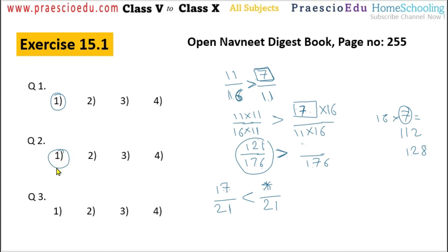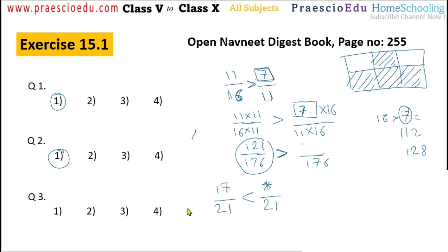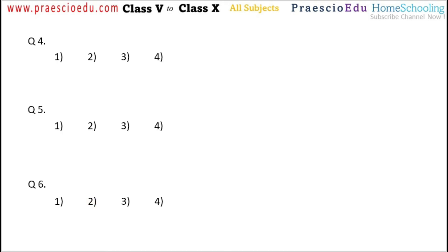Question number 3: what fraction does the shaded portion show in the adjoining figure? In the figure, there are two vertical lines inside — the shaded portions count to 1, 2, 3, 4 — so 4 are shaded. The total parts are 1, 2, 3, 4, 5, 6 — so total is 6. Therefore the fraction is 4 by 6, which is option number 2.